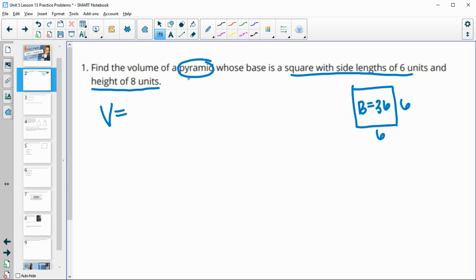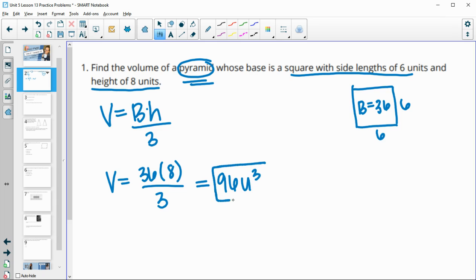Remember when we're using a pyramid, our volume is area of the base times the height divided by three. So now we know that the area of the base is thirty-six, they gave us the height of the pyramid is eight, and then we'll divide by three. So multiply thirty-six times eight divided by three, and you get ninety-six units cubed for that volume.